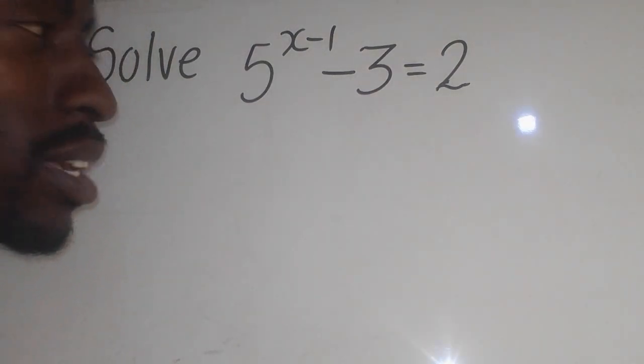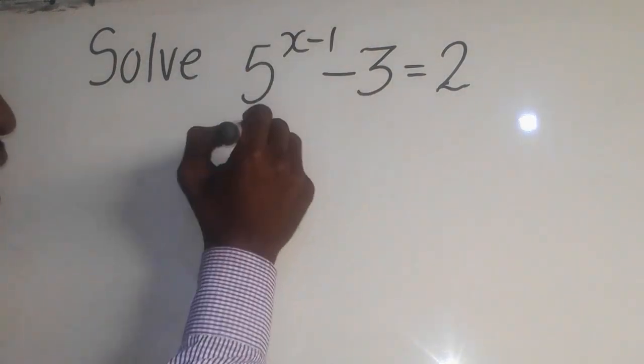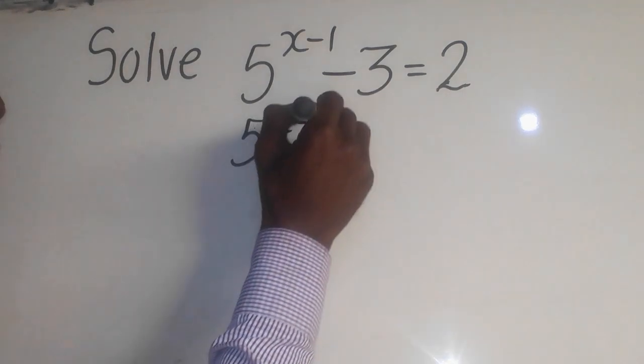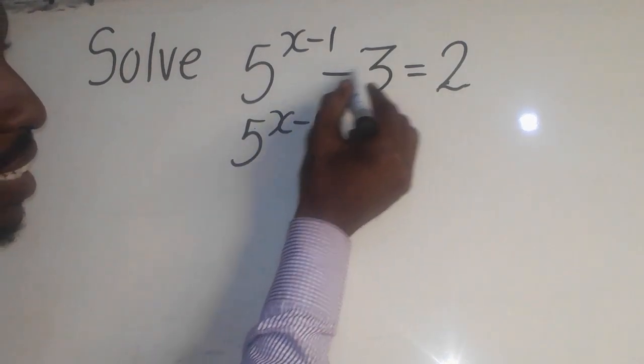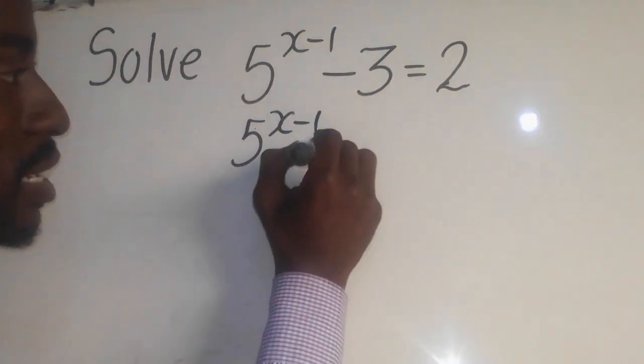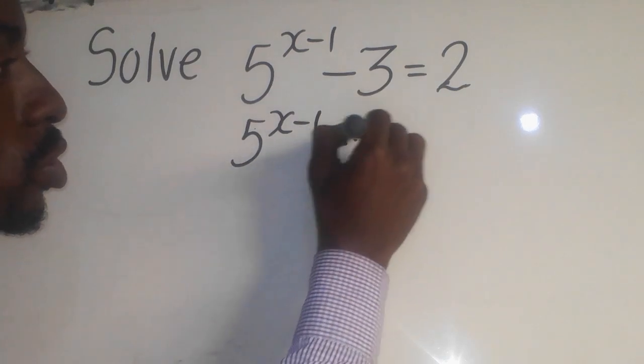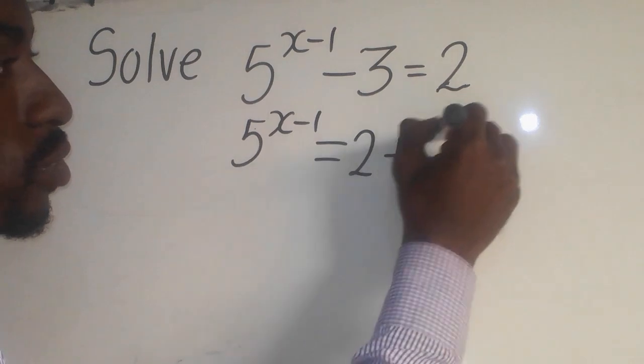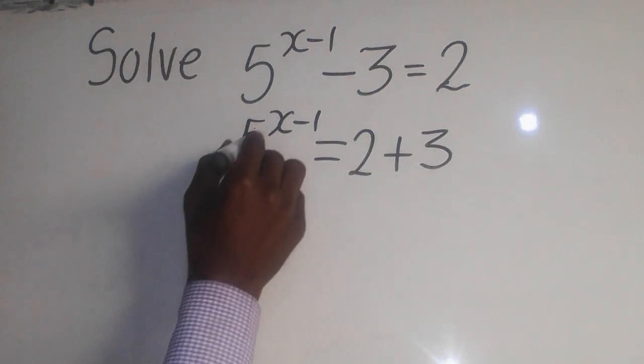Now for you to solve this question we need to put the like terms together. So it is 5 to the power x minus 1. Now this negative 3 has to come this side, so it is equal to 2. These 2, now when this one comes, this is positive 3 there.